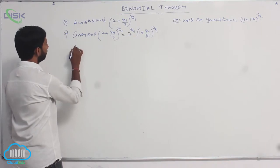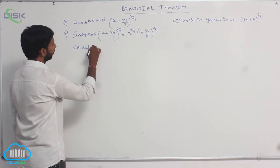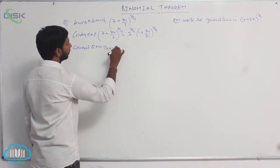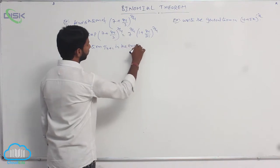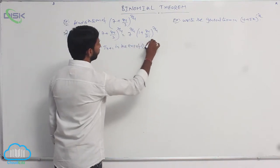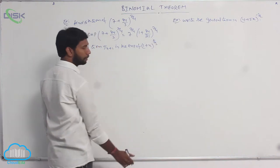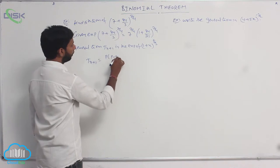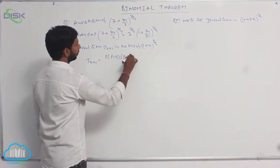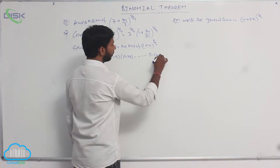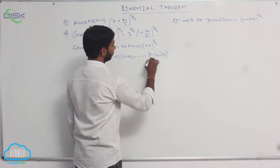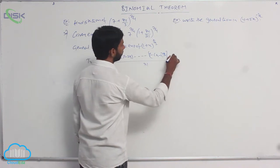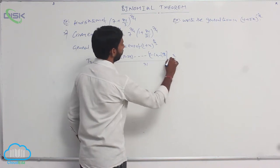The general term t(r+1) in the expansion of (1 + x) whole power p/q is: t(r+1) = [p · (p − q) · (p − 2q) · ... · (p − (r−1)q)] / r! · (x/q)^r.